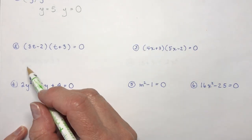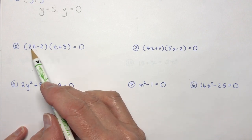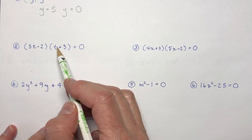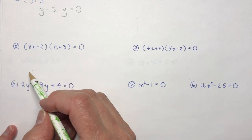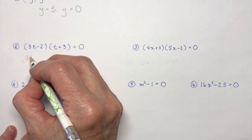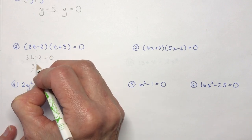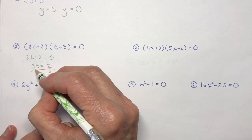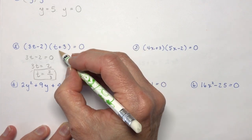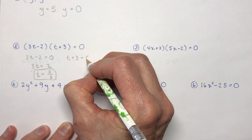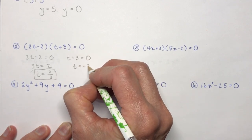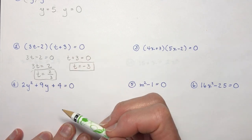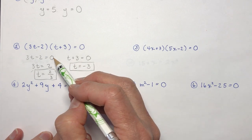Now if I have something like this, it's a little more difficult but it's already in factored form, so all you have to do is take each of these little factors, set them equal to zero, and solve for the variable. So: three t minus two equals zero, three t equals two, so t equals two over three. That's one solution. The other one: t plus three — you probably could figure that out in your head, but write it out because you might say minus two thirds by mistake.